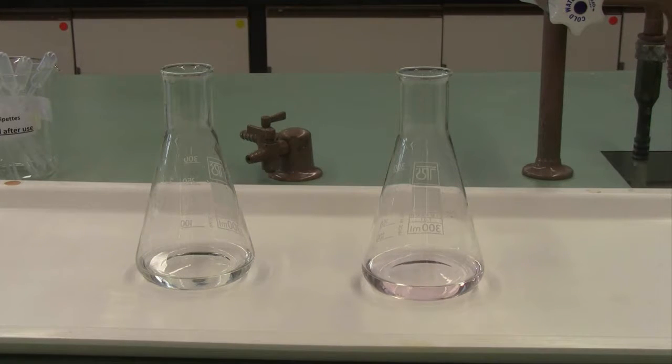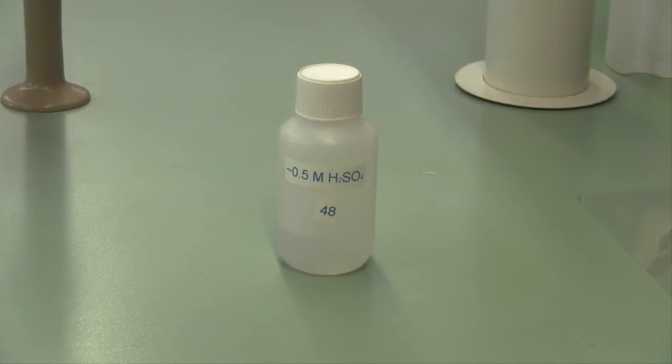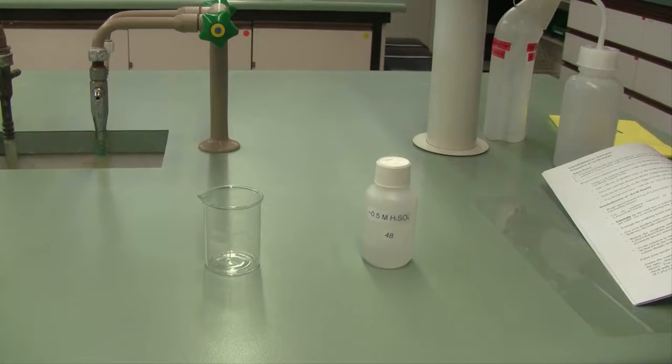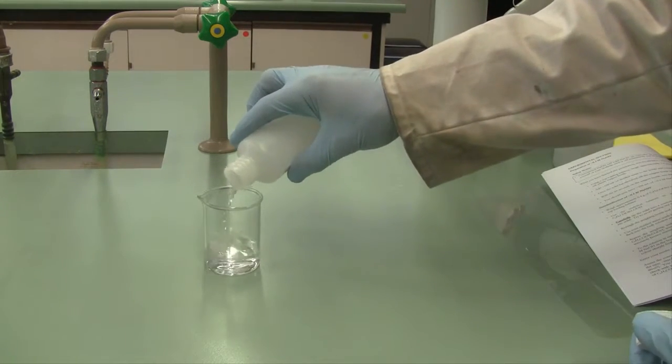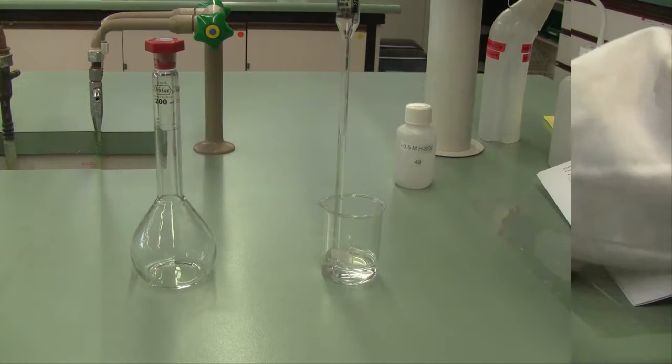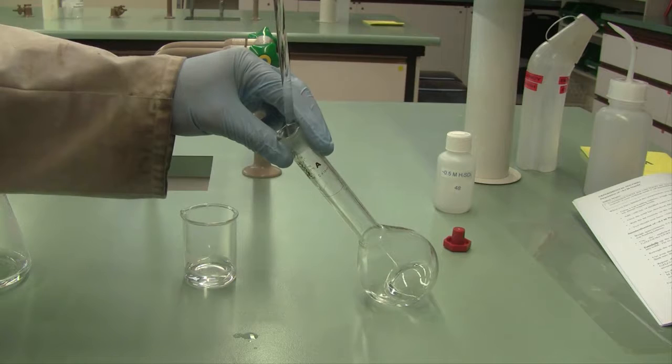Now that we've standardized our sodium hydroxide, we can use that to determine the true concentration of our unknown 0.5 molar sulfuric acid solution. First we're going to need to dilute that solution. Pour some of your sulfuric acid solution into a clean dry beaker. Take a 20 ml aliquot of the sulfuric acid, following the usual rinsing protocols, and deliver that into a 200 ml standard flask.